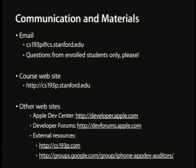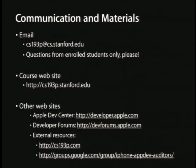A few pieces of information on how to get in touch. Email: cs193p at cs.stanford.edu — that's our staff list for enrolled students. The class website is cs193p.stanford.edu, where we'll post links to material and class information. Check there frequently — that's your first point of contact. Slides will be posted as soon as the lecture is done.